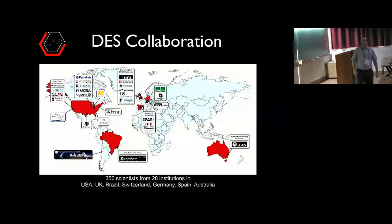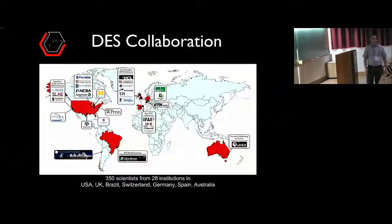In order to make this experiment possible, we need a large number of collaborators and institutions. There are 350 scientists in 28 institutions, shown in red in the US, UK, Brazil, Switzerland, Germany, Spain, and Australia, and the telescope is in Chile.